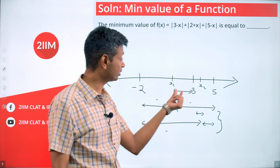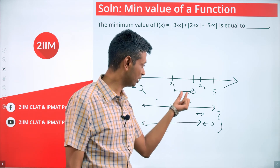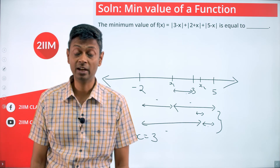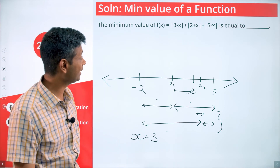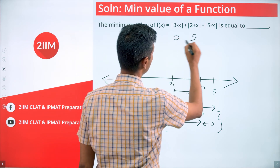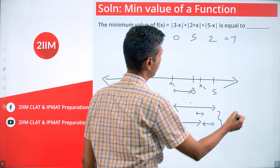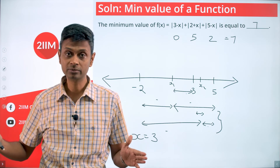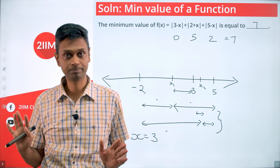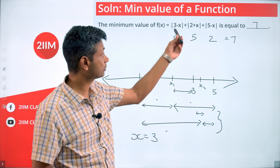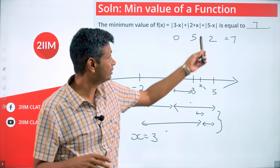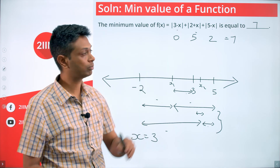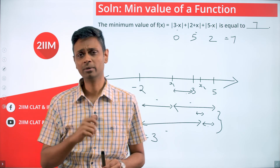The remaining part is the distance from x to 3. To minimize the total, we minimize this remaining distance. Since 3 lies between -2 and 5, we simply set x = 3, making the distance to 3 equal to zero. The minimum value is then 5 + 2 = 7. In general, the minimum equals the distance between the largest and smallest of the three points, achieved when x equals the middle point.